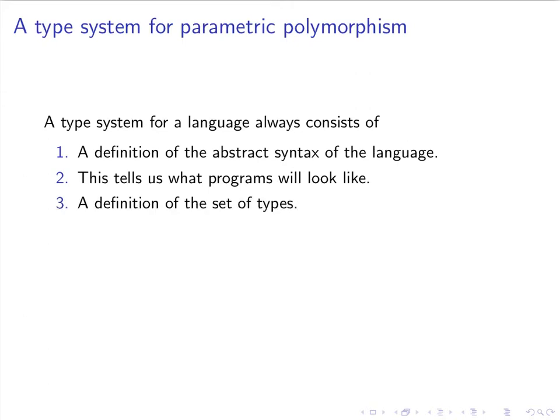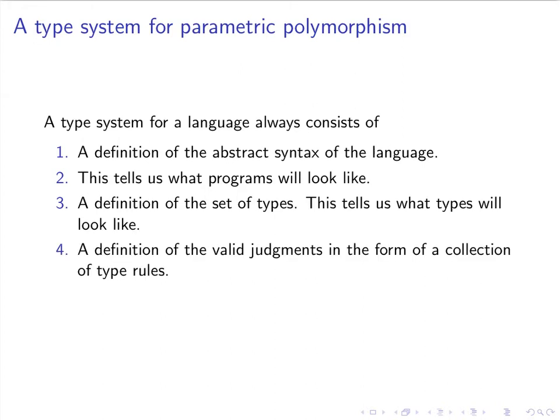Next, we define what the valid types are by a collection of formation rules. Once we have the formation rules, which tell us what types will look like, we can then define what the valid judgments are by defining a collection of type rules. The type judgments tell us how we assign types to expressions in the language, so the type system is a system for type checking. Later, not in this session but next time, we'll be talking about type inference.